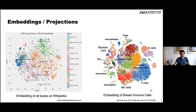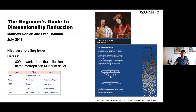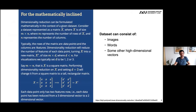There's a really nice article called the Beginner's Guide to Dimensionality Reduction, which I also use in some of my courses. Their dataset is 800 artworks — a collection of 800 paintings — and they nicely guide you through the dimensionality reduction process. They start with a math introduction: you see your items as feature vectors where each property like age or gender is represented as a dimension, and dimensionality reduction means reducing that to two- or three-dimensional vectors. This works with images, words, single cell data, and so on.